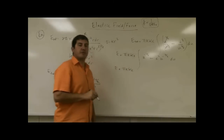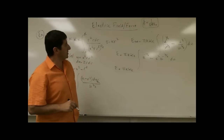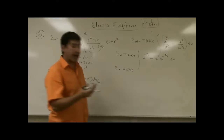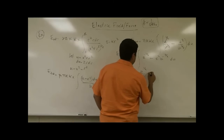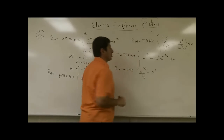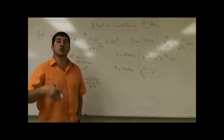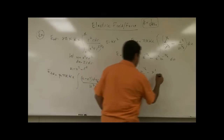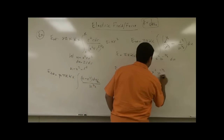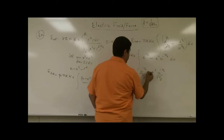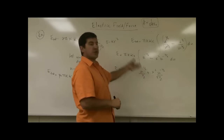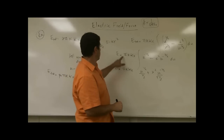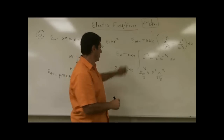The integral of u to the minus one half is u to the one half over one half. The integral of u to the minus three halves is u to the minus one half over minus one half. The two minus signs combine to give a plus, and the factor of one half in the denominator brings a factor of 2 back to the numerator, so we pick up an extra factor of 2 overall.